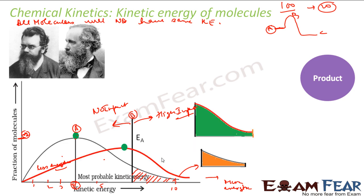Now if we increase the temperature, we get a new curve shown in red. The most probable kinetic energy has also increased — earlier it was A, now it has become A dash. The new area shown in green dots is bigger than the old orange area. This new area represents the high-impact molecules — those with energy greater than activation energy — and their number has increased.